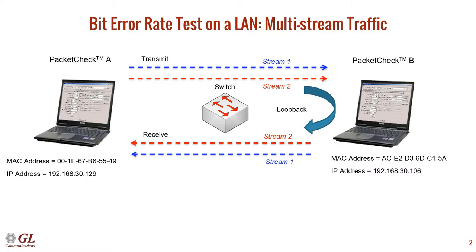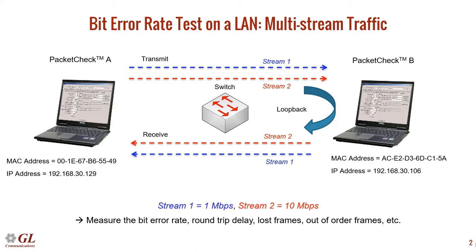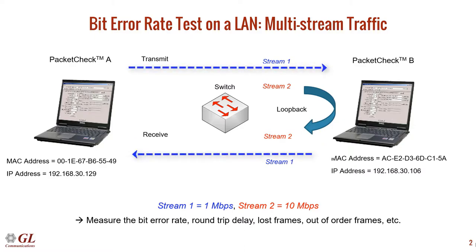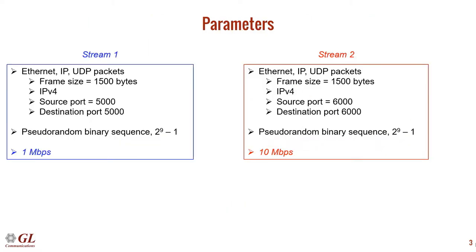All relevant statistics will be computed on PacketCheckA, such as the bit error rate, round-trip delay, lost frames, and so on. For this video, we will generate two simultaneous streams of traffic. The two streams are identical, but stream 1 will be transmitted at 1 megabit per second and stream 2 will be transmitted at 10 megabits per second. Both streams will send Ethernet frames which contain IP and UDP data.